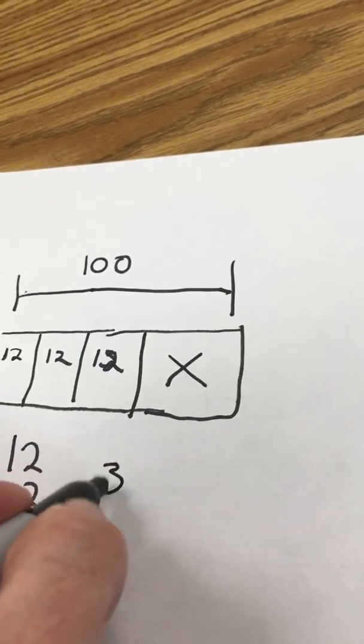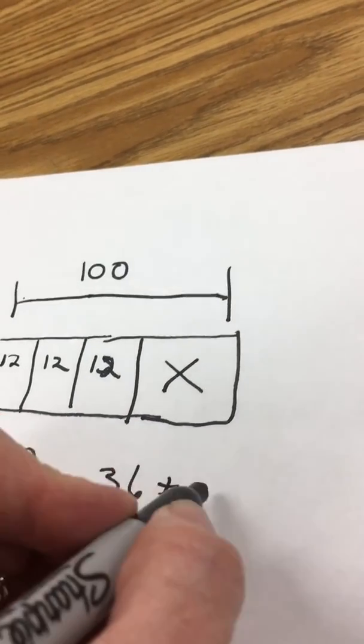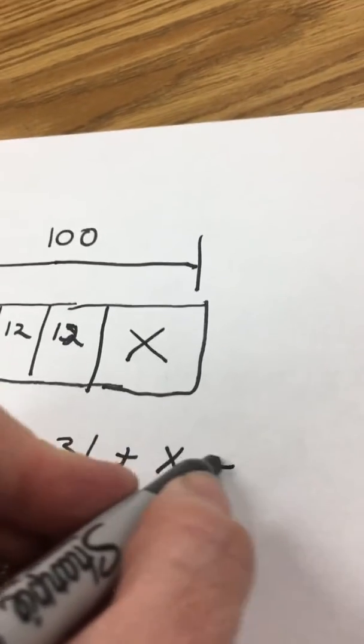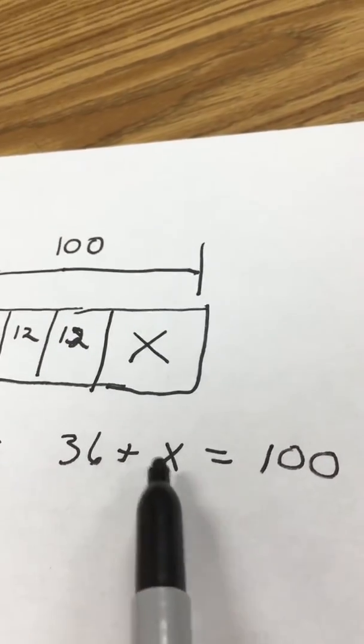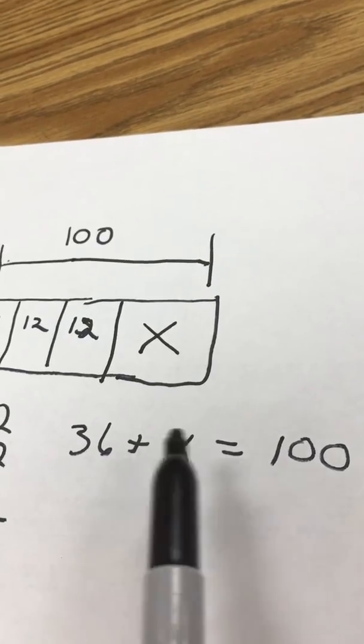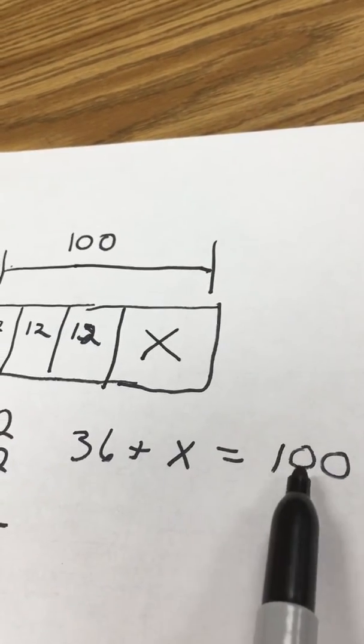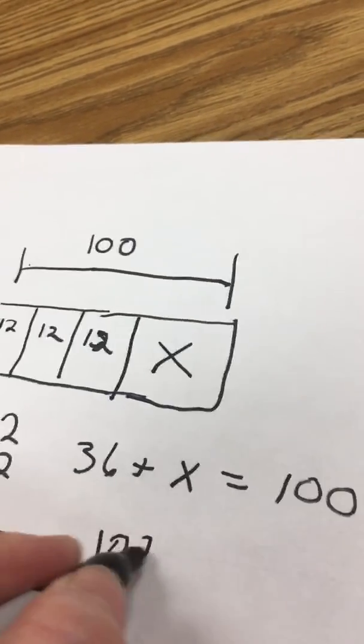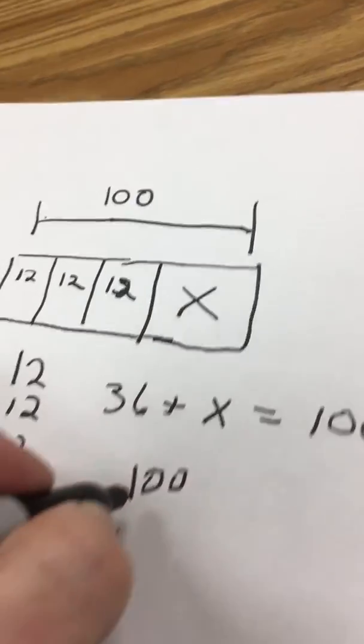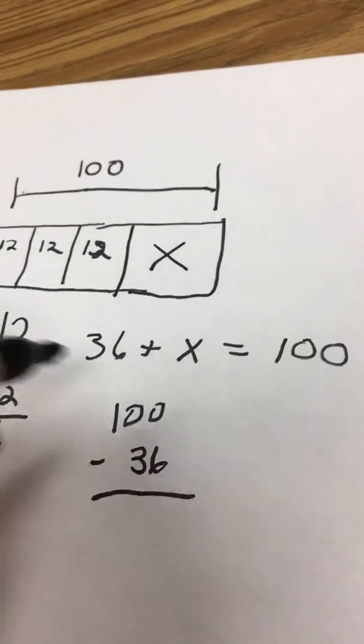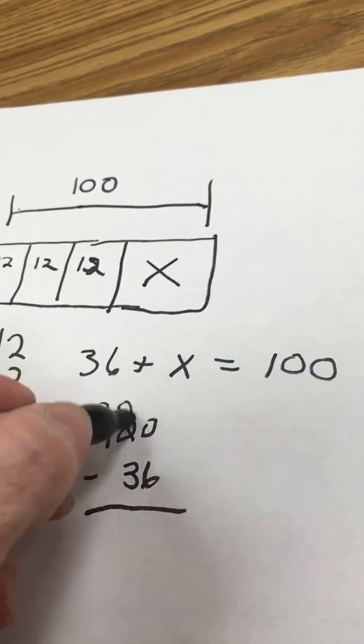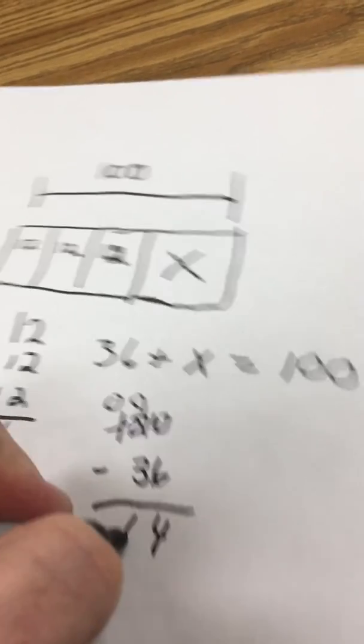So we know 36 plus some number equals 100. Well, when we don't know what the number is right here, we kind of have to do the opposite. So we know we need to subtract. So it would be 100 minus 36. That would be 64.